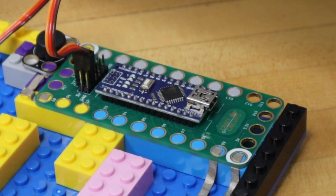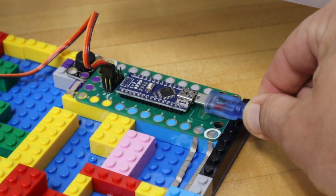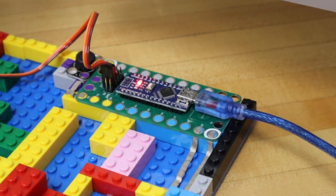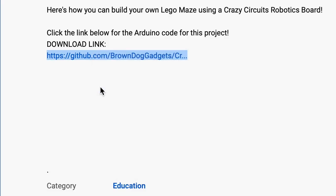Now let's program the robotics board. Plug the board into your computer with a USB cable. Download the Arduino sketch from the link in the description.